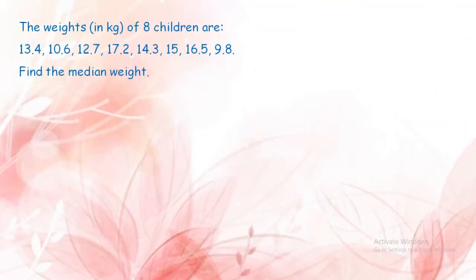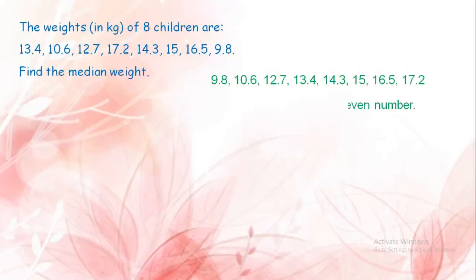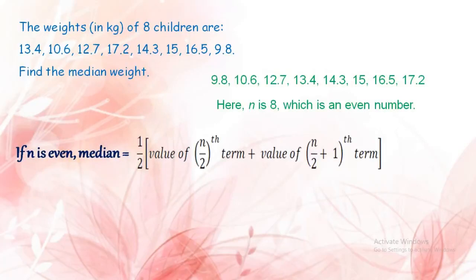Another problem: The weights in kilograms of 8 children are given as 13.4, 10.6, 12.7, 17.8, 14.3, 15, 16.5, and 9.8. We have to find the median weight. Let's rearrange in ascending order. There are 8 children, so the number of observations is even. We use the formula: one-half of the value of the (n/2)th term plus the (n/2 + 1)th term.